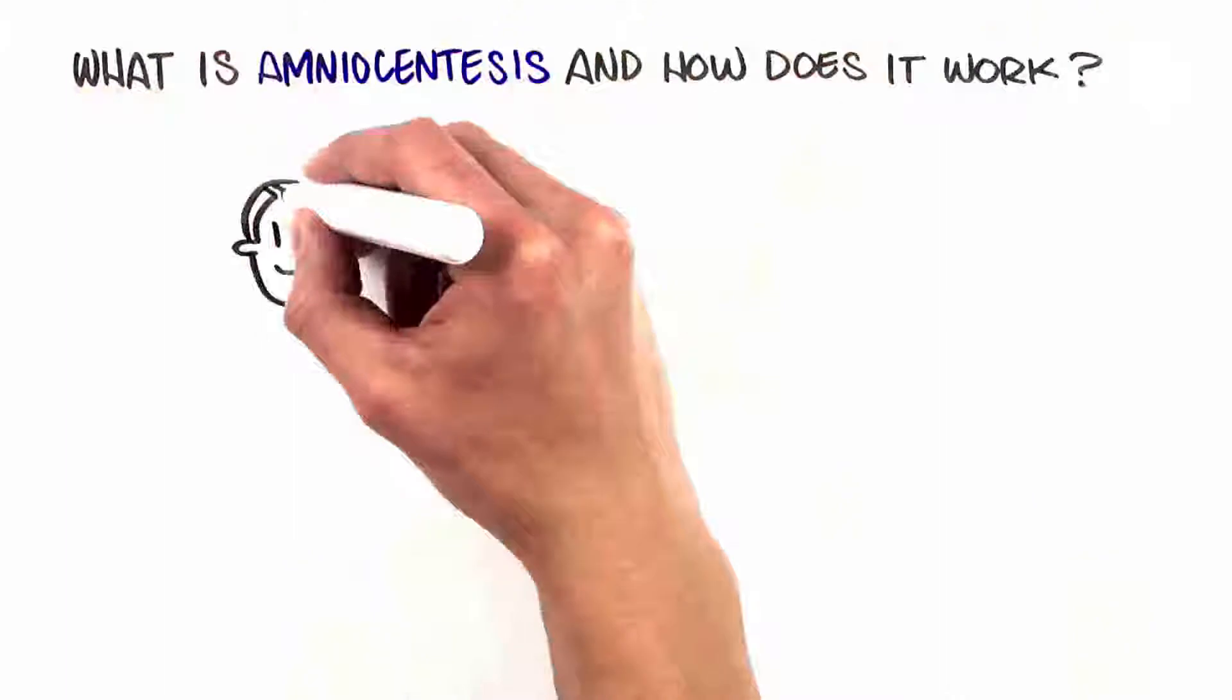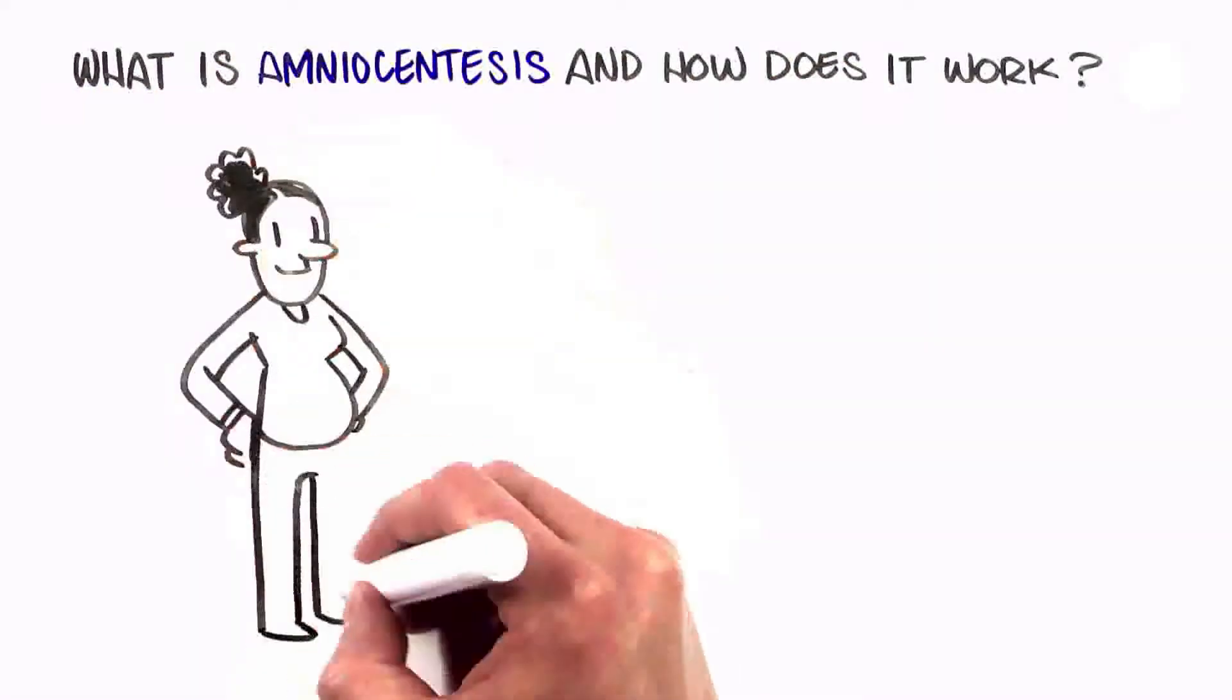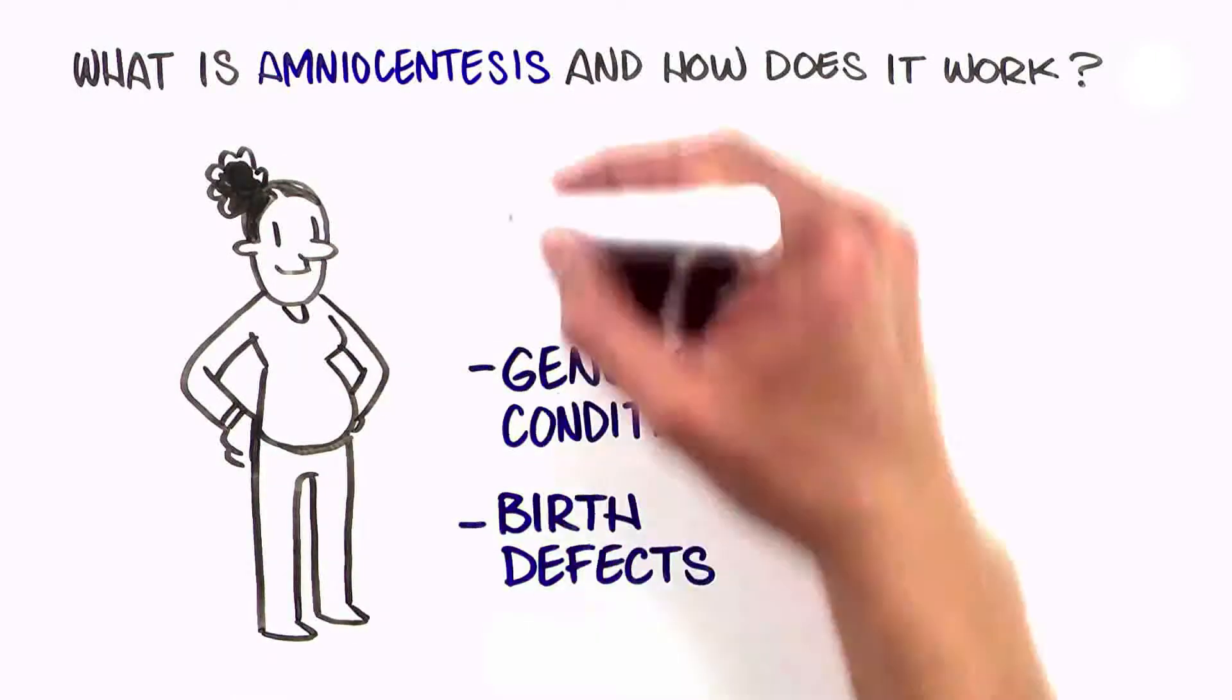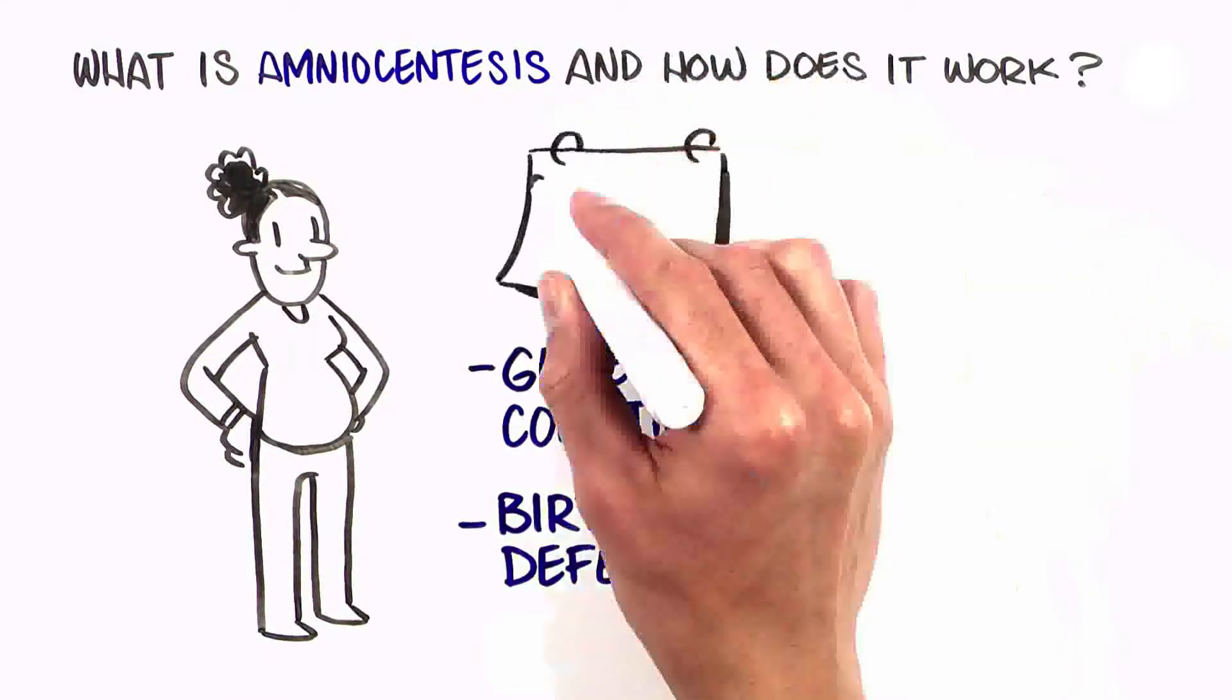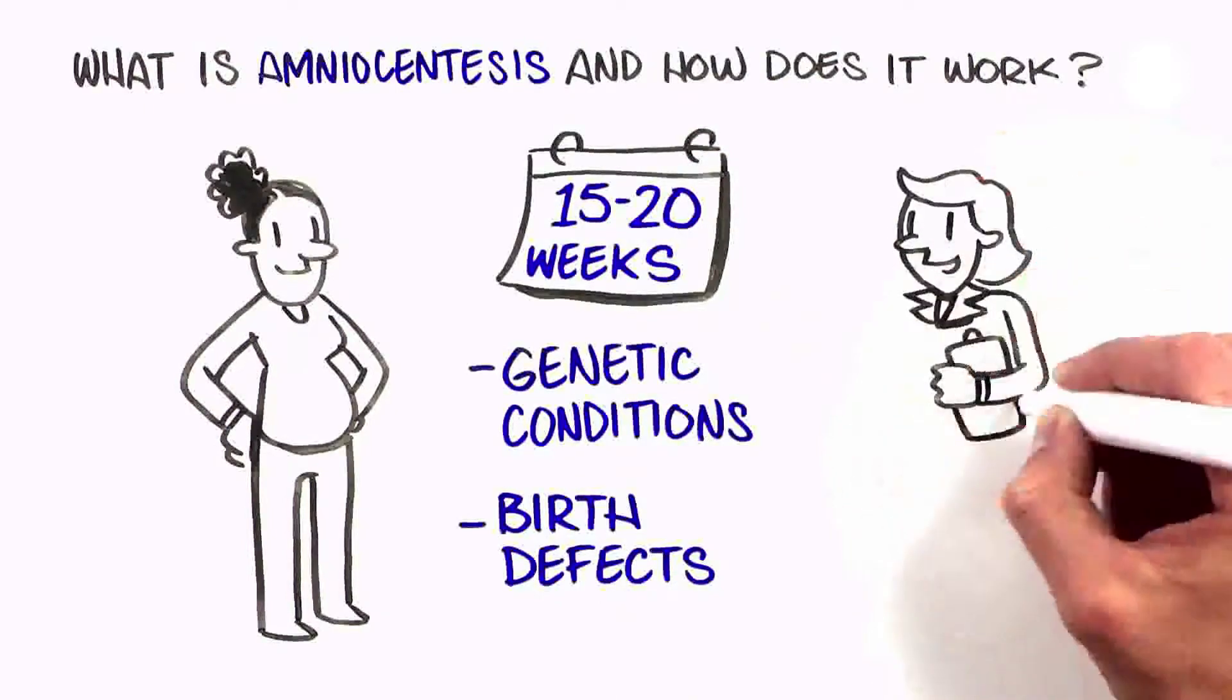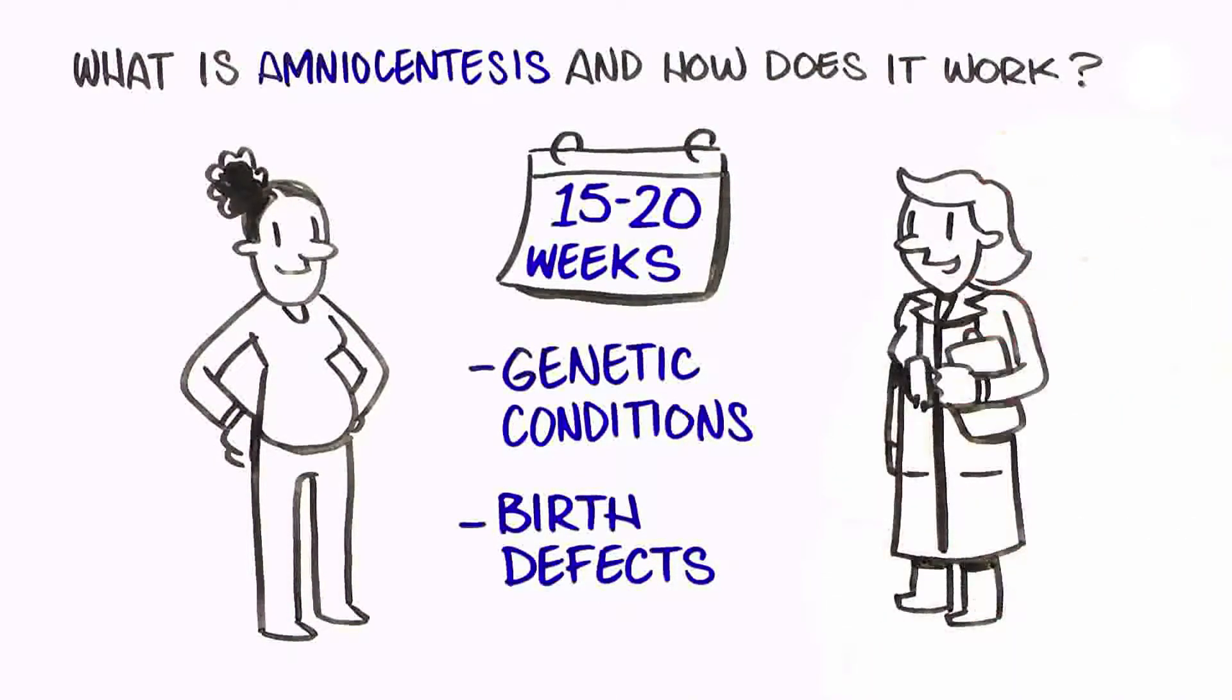Amniocentesis is an optional procedure that can be done in pregnancy to test for certain genetic conditions and birth defects. It is usually performed at approximately 15 to 20 weeks of pregnancy at a doctor's office that specializes in doing this procedure.